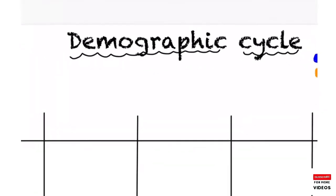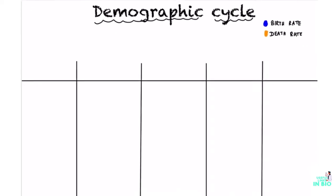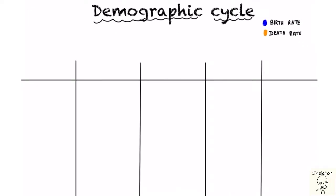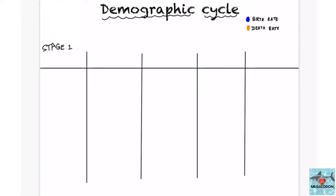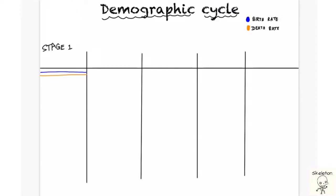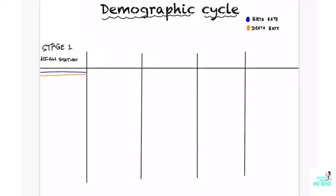Let us see about the demographic cycle in detail. There are five stages in the demographic cycle. In each stage, the birth rate will be represented by blue lines and the death rate by orange lines. In stage one, both the birth rate and death rate are on the higher side. Since both are at a stationary level, this population is called high stationary.